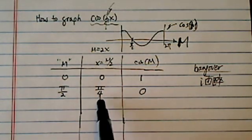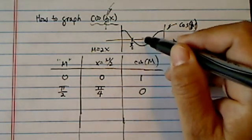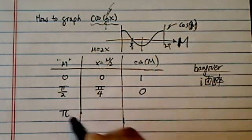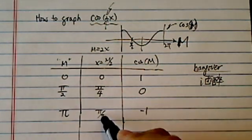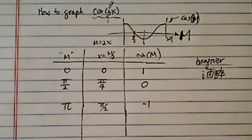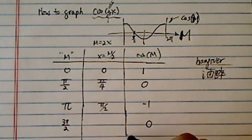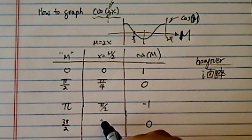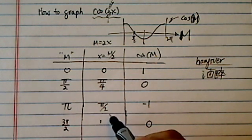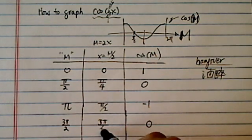So as you can see already, this one is shifted or squeezed in there. Next, the point over here is pi. When m equal to pi, I have a minus 1 for the curve. But then x is actually pi over 2. 3 pi over 2, I have a 0 for cosining m. But then over here, the value itself is actually, divided by 2, so it's 3 pi over 4.